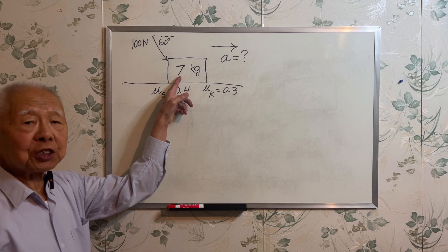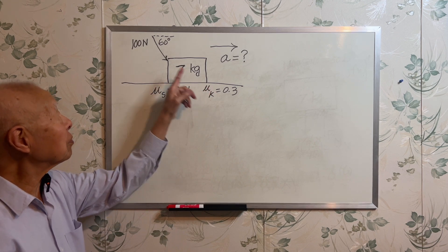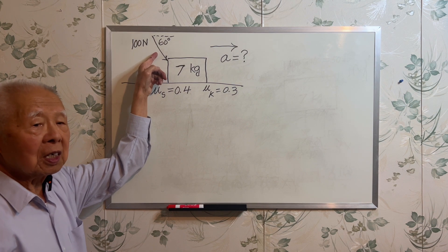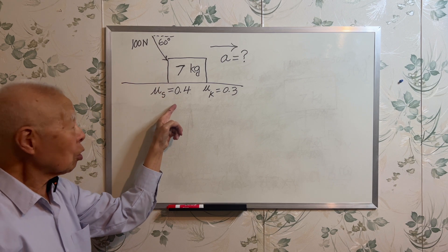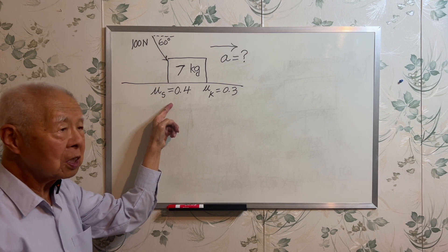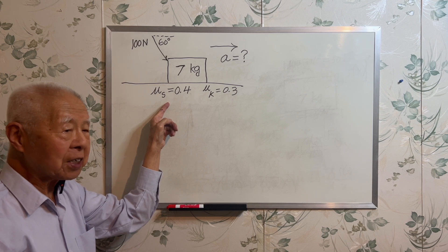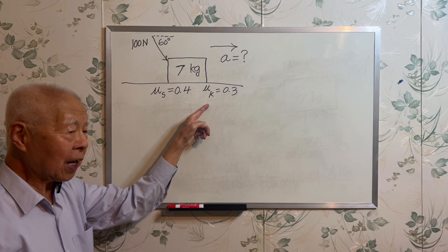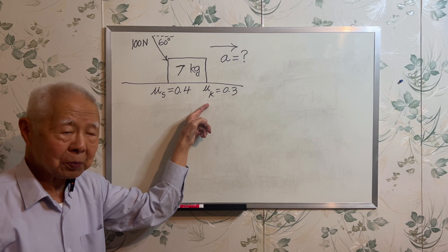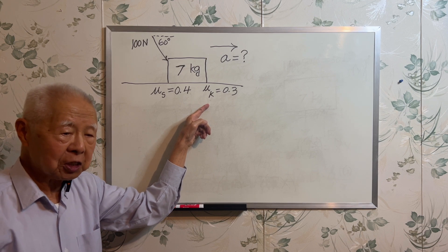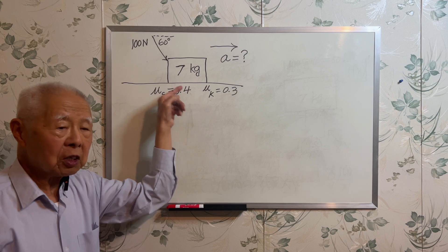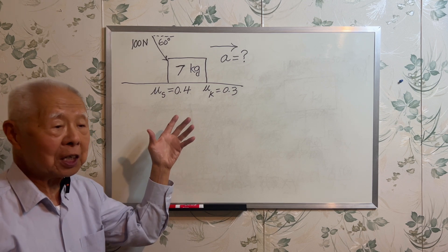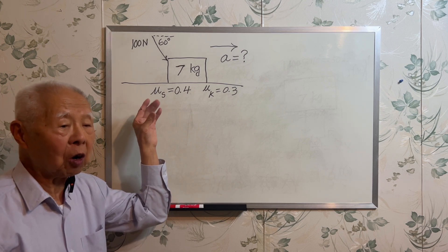Seven kg box on a table, applied force 100 Newtons, 60 degrees. The coefficient of friction is given: one is the static coefficient of friction, another one is the kinetic coefficient of friction. The question is asking what is the acceleration horizontally? We understand if it moves, it must be horizontal motion.